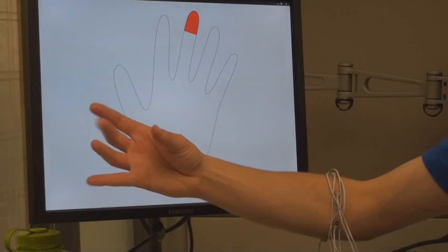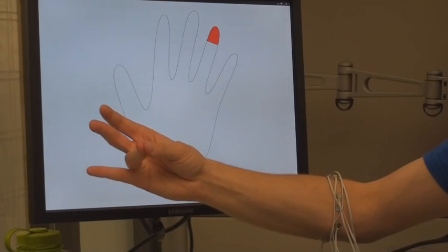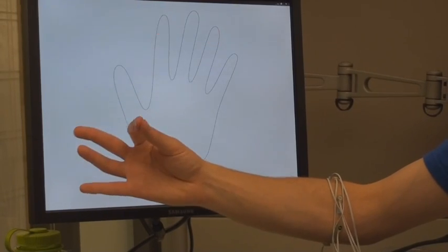To do this, we first build a gesture recognizer by collecting muscle data through a narrow band of sensors on the upper forearm while a person performs a known set of gestures.